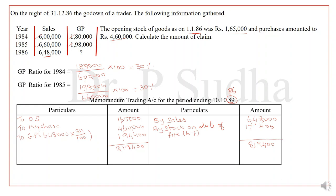In this problem, there is no average clause mentioned. So we apply the usual formula: amount of claim = stock on date of fire minus salvage value. The stock on date of fire is 1,71,400. There is no stock salvage, so minus 0. The amount of claim is 1,71,400. I hope you understood how to calculate fire insurance claims when there is undervaluation of stock and when an average clause is given. Thank you for watching.